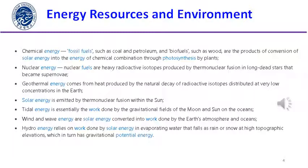Chemical energy can be produced from fossil fuels such as coal and petroleum, and from biofuels such as wood — these are products of the conversion of solar energy into chemical energy through photosynthesis by plants. Nuclear fuels are heavy radioactive isotopes produced by thermonuclear fusion in long-dead stars that became supernovae.